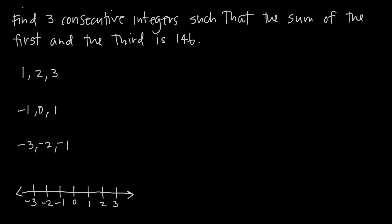In this video we're talking about consecutive integers, and when we say consecutive, we mean numbers that are just one right after another. For example, 1, 2, 3 are consecutive integers. Negative 1, 0, and positive 1 are all consecutive integers, as are negative 3, negative 2, negative 1.